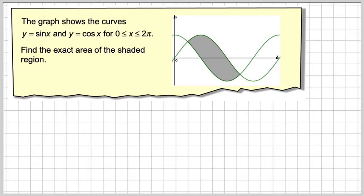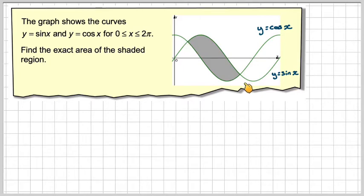First of all we've got to identify which one is cos and which one is sin. So this one here is sin and this one here is cos. Before we can set up the integral we need to find the x-coordinate of that point and the x-coordinate of that point.